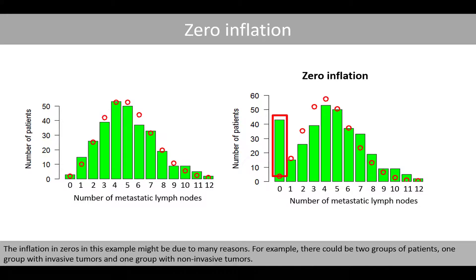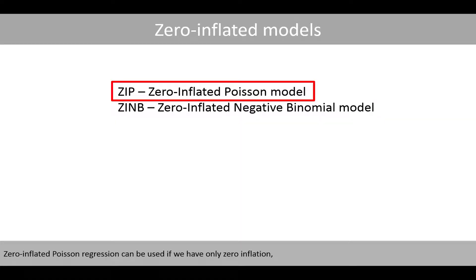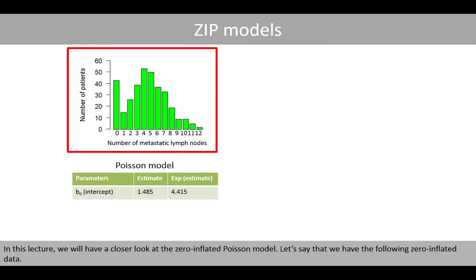The inflation of zeros in this example might be due to many reasons. For example, there could be two groups of patients: one group with invasive tumors and one group with non-invasive tumors. To deal with zero inflation, a number of zero-inflated models have been developed. Zero-inflated Poisson regression can be used if you have only zero inflation, whereas the zero-inflated negative binomial model can be used if you have both zero inflation and over-dispersion. In this lecture, we'll have a closer look at the zero-inflated Poisson model.